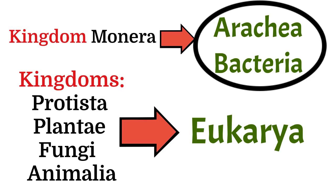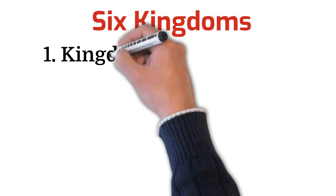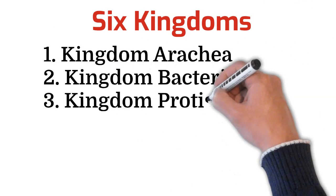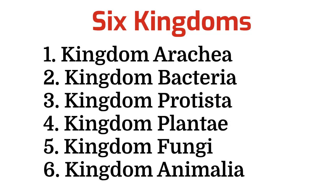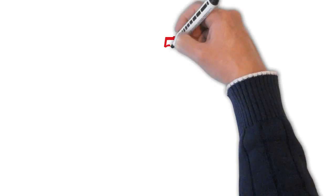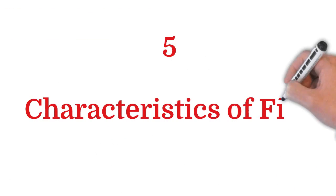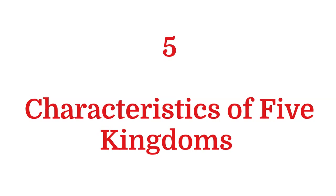Thus, it resulted in a six kingdom classification system in which the six kingdoms are Archaea, Bacteria, Protista, Plantae, Fungi, and Animalia. Now, we will study the characteristics of the five kingdoms: Kingdom Monera, Kingdom Protista, Kingdom Fungi, Kingdom Plantae, and Kingdom Animalia.